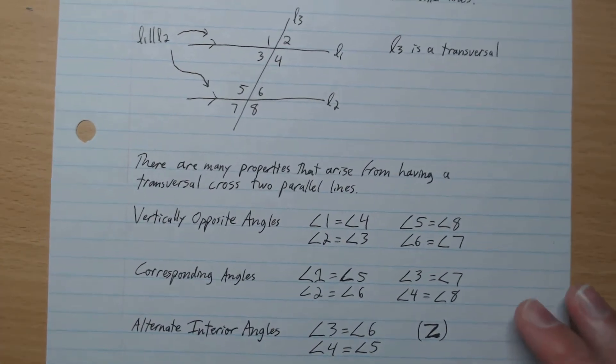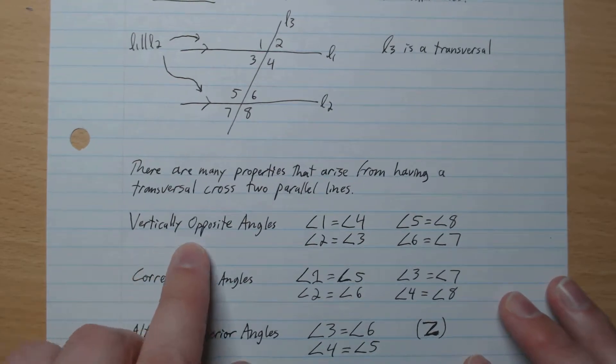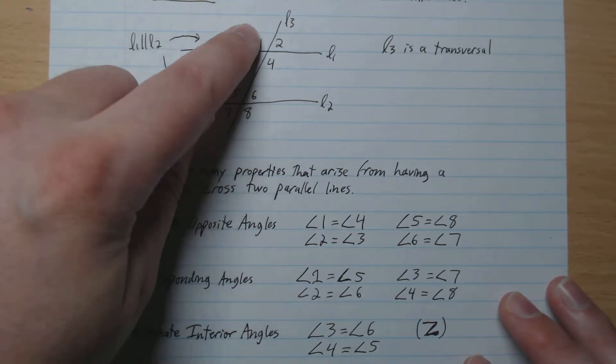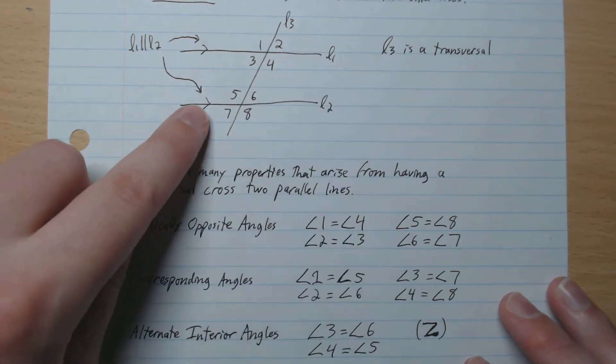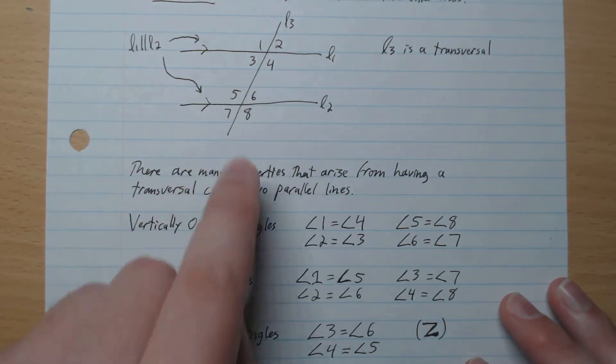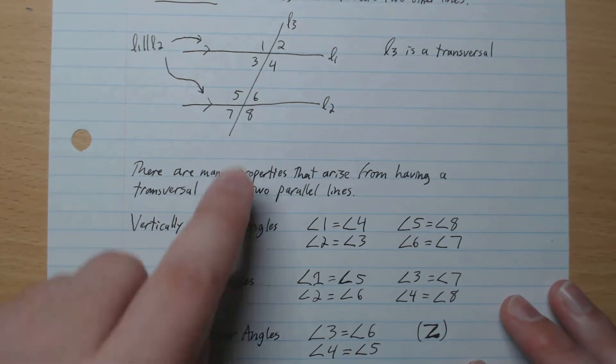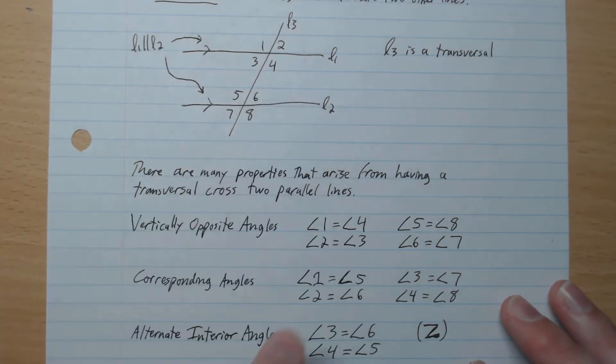The first one is vertically opposite angles. So angle 1 and 4, 2 and 3, 5 and 8, 6 and 7. This one is really easy to remember. Opposite: 1, 4, 2, 3, like that.